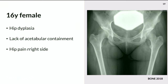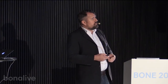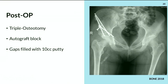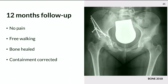Another case: a 16-year-old with hip dysplasia on the right side, causing pain. The decision was to perform a triple osteotomy. You could use just the iliac crest graft, but there is a big gap and additional holes, so I filled the rest with the putty. After one year, everything is integrated and she can do full weight-bearing. I'm not saying you have to use it in every case, but it is possible and it worked.